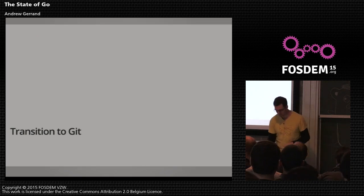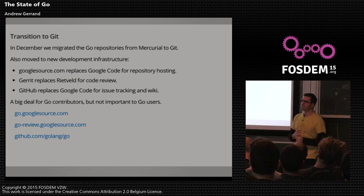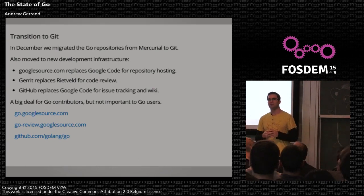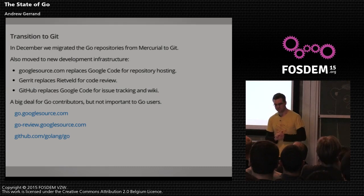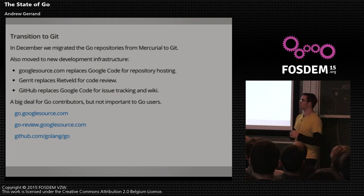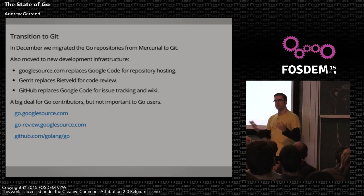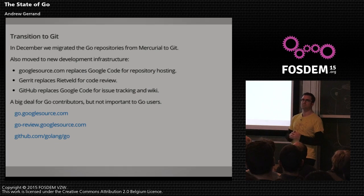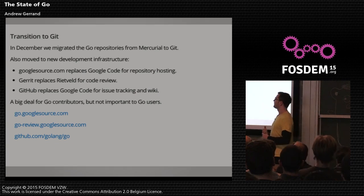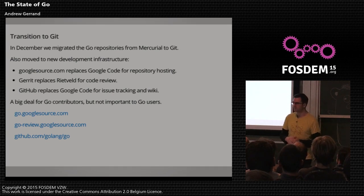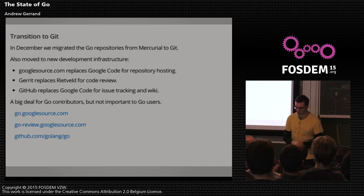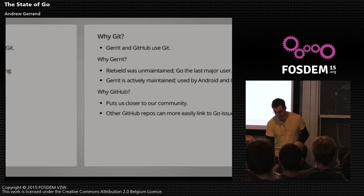Around the same time as 1.4, but largely disconnected from it, we transitioned from Mercurial to Git. That means the core Go repository and all the sub-repositories are now in Git instead of Mercurial. All the change history was preserved. This coincided with moving to new development infrastructure — we're now using googlesource.com for our main repository, Gerrit instead of Rietveld for code review, and GitHub instead of Google Code for issue tracking and the wiki.